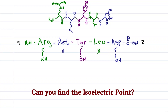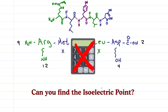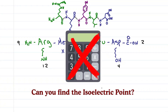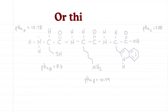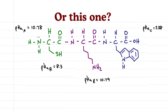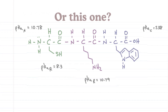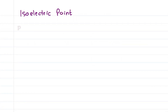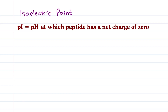Can you quickly find the isoelectric point for this peptide without a calculator? Or how about this one? The isoelectric point, or pI, is the pH at which a molecule — in this case our peptide — has a net charge of zero.